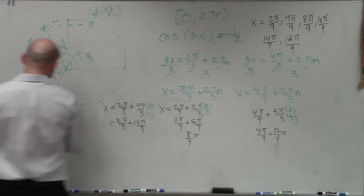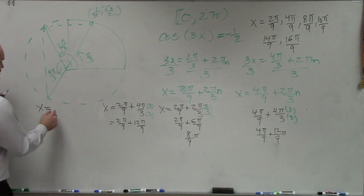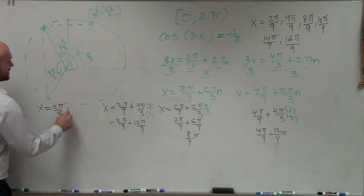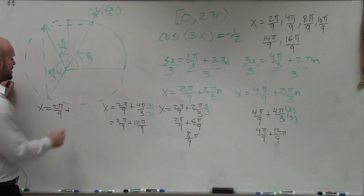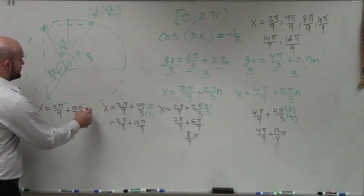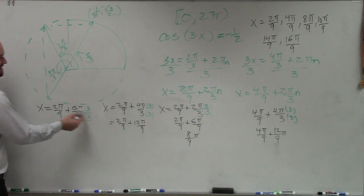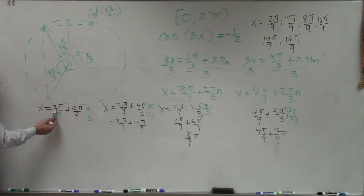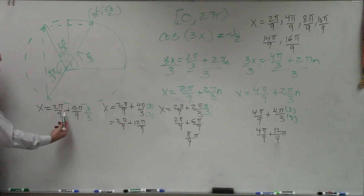And then let's go and do the last one for 3. x equals 2π over 9 plus, let's say n was 3. So that would be 6π over 9. Multiply by 3 over 3. Well, 3 times 6 is going to be 18. 18 plus 2 is 20. So is that going to work? No.